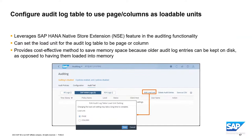When configuring the audit log table, you can now set it to use page or column as loadable units, leveraging the NSC feature in the auditing functionality. This is turned on by default in HANA 2 SPS 07. You can set the load units for the audit log table to page (the default) or column if you want to disable NSC. This provides a cost-effective method to save memory space because old audit log entries can be kept on disk rather than loaded into memory — helpful when you have a very large audit log table.